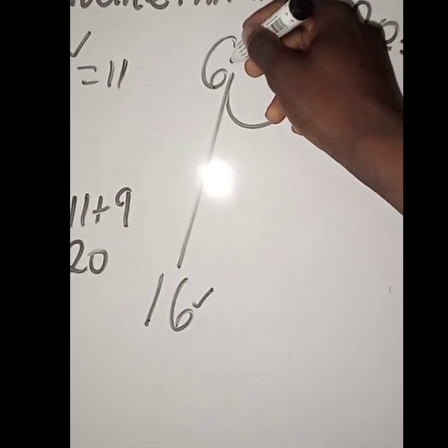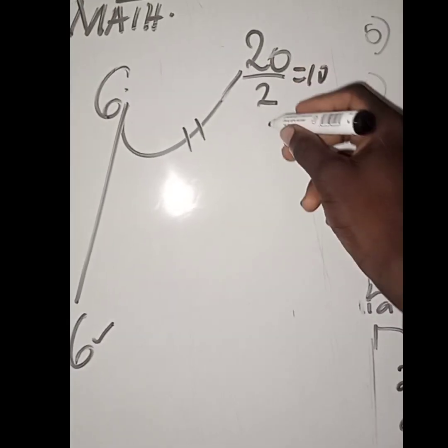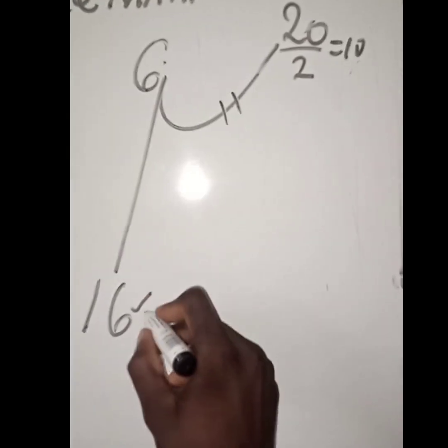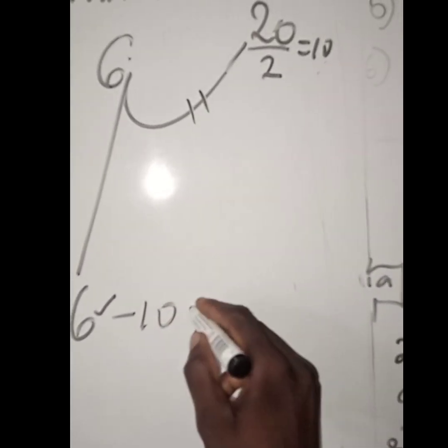If you want to get the 6 up here, you still divide 20 by 2, which will give you 10. So 16 minus 10 will give you 6.